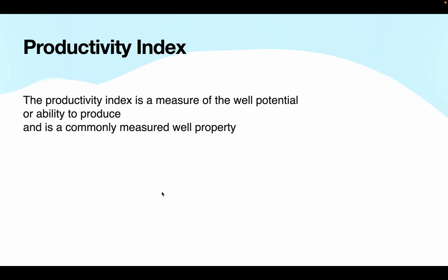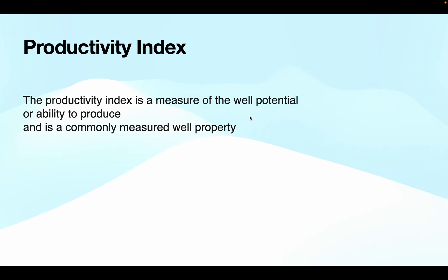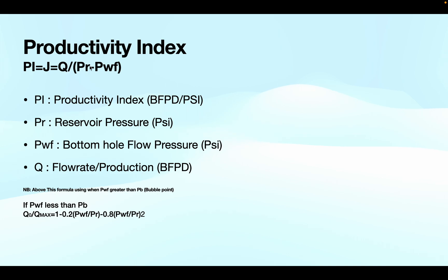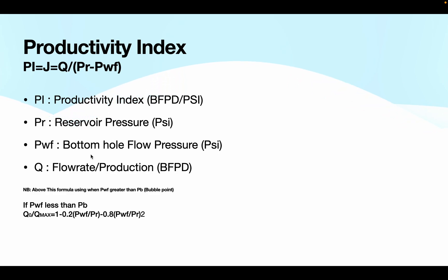Productivity Index. The Productivity Index is a measure of the well potential or ability to produce the well, and it is a commonly measured well property. The Productivity Index formula: PI equals Productivity Index. This refers to pressure — sometimes called static pressure — and this is the bottom-hole flowing pressure, sometimes called flow pressure.